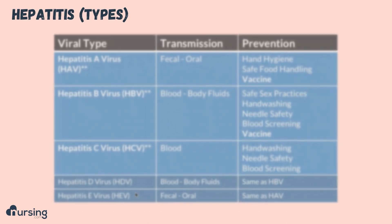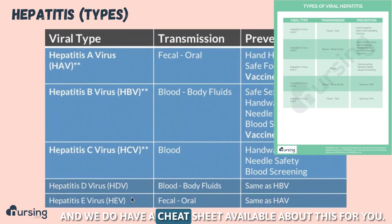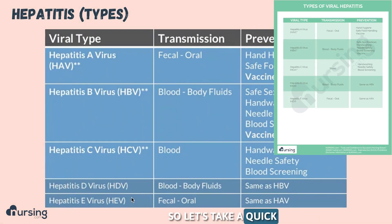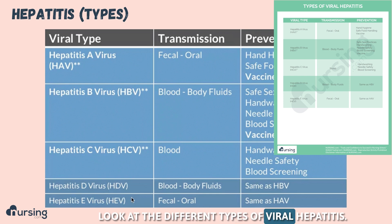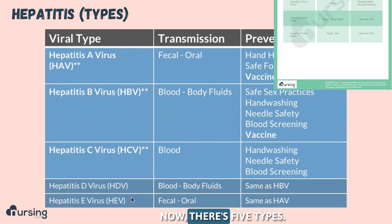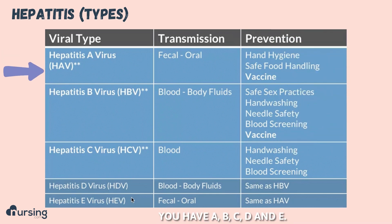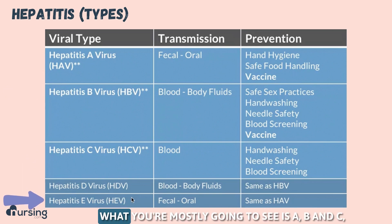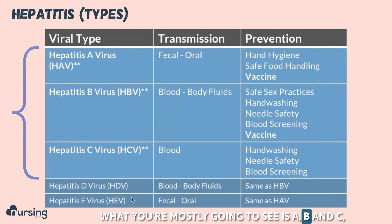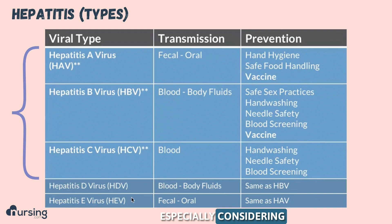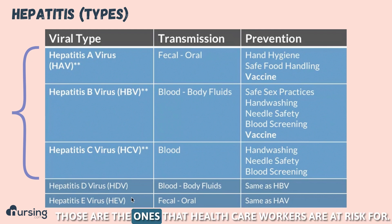Here's a little chart that we have, and we do have a cheat sheet available about this for you. Let's take a quick look at the different types of viral hepatitis. There are five types: A, B, C, D, and E. What you're mostly going to see is A, B, and C, especially considering those are the ones that healthcare workers are at risk for.